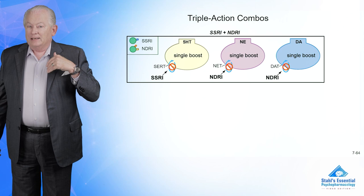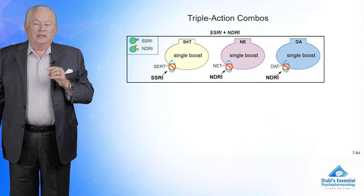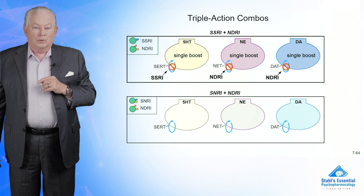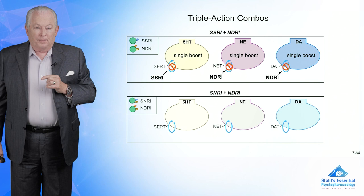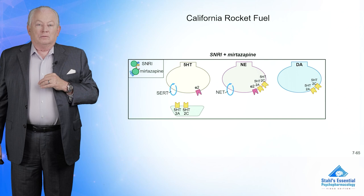One of the most common ways to get triple action is to take an SSRI and add bupropion to it, which is an NDRI — then you get serotonin, norepinephrine, and dopamine reuptake blockade. Many patients will have a good response to the addition of bupropion to an SSRI or an SNRI. You can add either SSRI plus bupropion or SNRI plus bupropion and get a triple action.